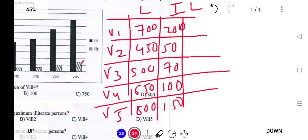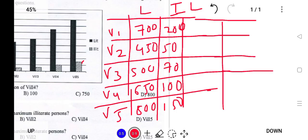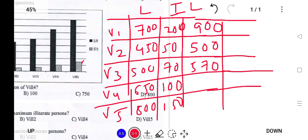Now the total population combines both literate and illiterate. Village 1: 700 plus 200 equals 900. Village 2: 450 plus 50 equals 500. Village 3: 500 plus 70 equals 570. Village 4: 650 plus 100 equals 750. Village 5: 800 plus 150 equals 950. We have obtained the total population for all villages.